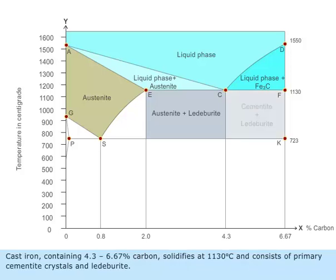Cast iron containing 4.3 to 6.67 percentage carbon solidifies at 1130 degrees centigrade and consists of primary cementite crystals and ledeburite.